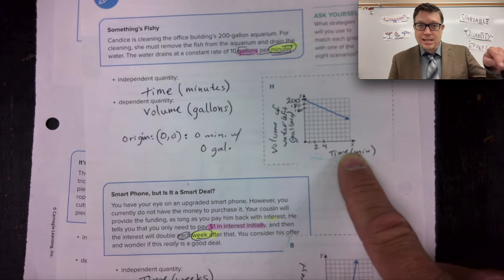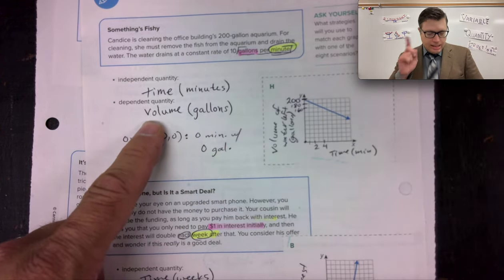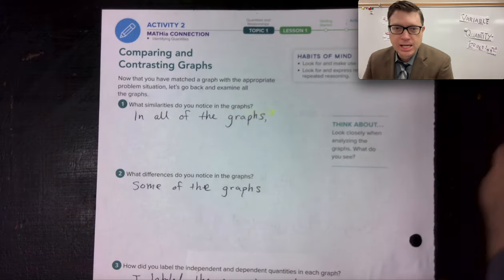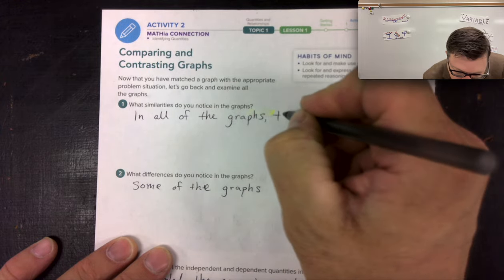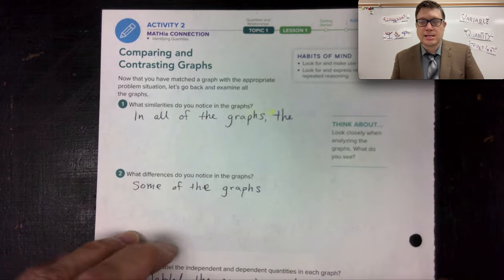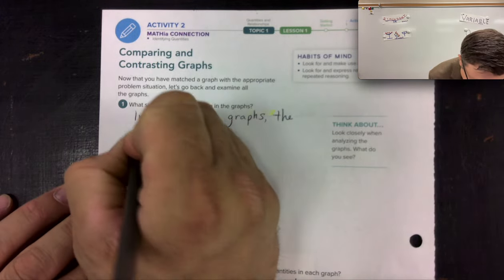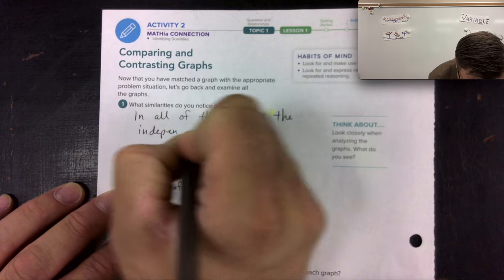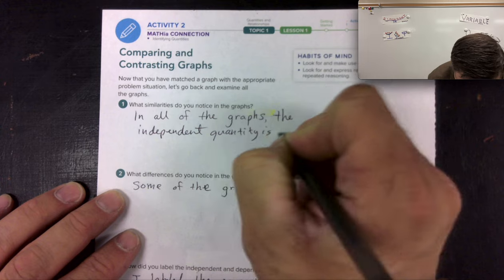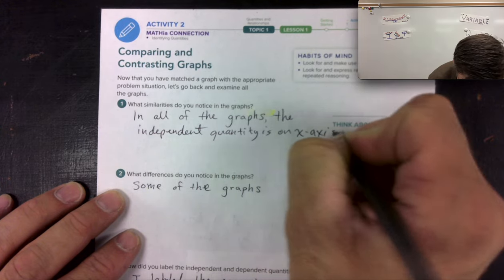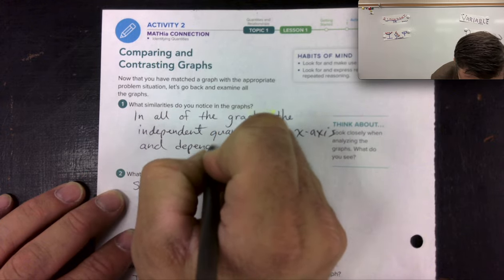And that might actually happen in the majority of our graphs, that the independent quantity seems to show up as our x-axis label and dependent quantity is our y-axis label. That's actually the first observation. In all of the graphs, the dependent quantity is on the y-axis and the independent quantity is labeled on the x-axis. Dependent. And then dependent on the y.